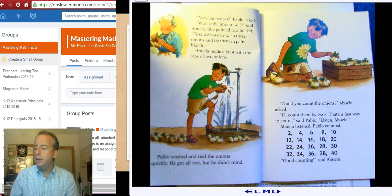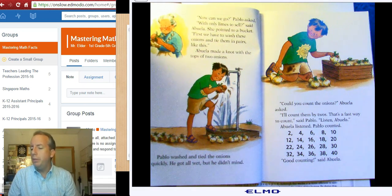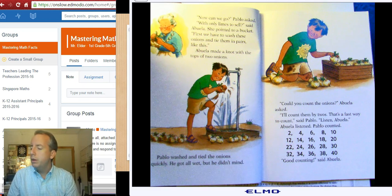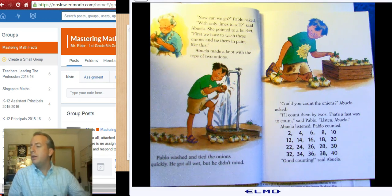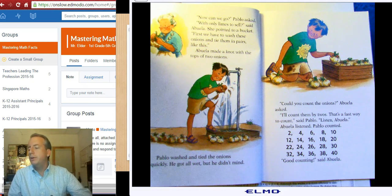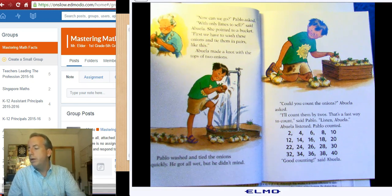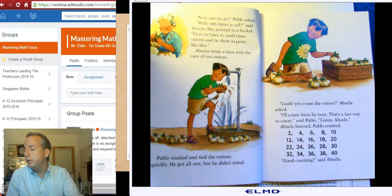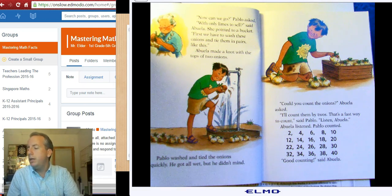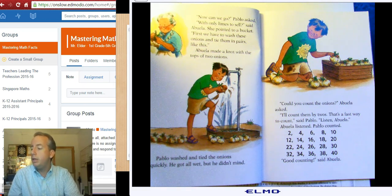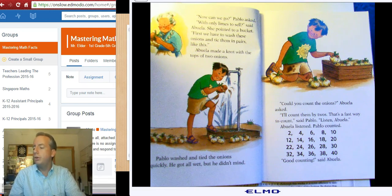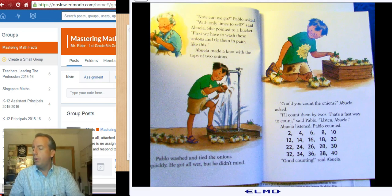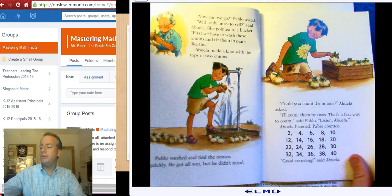Now can we go? Pablo asked. With only limes to sell, said Abuela. She pointed to a bucket. First, we have to wash these onions and tie them in pairs, like this. Abuela made a knot with the tops of two onions. Pablo washed and tied the onions quickly. He got all wet, but he didn't mind. Could you count the onions? Abuela asked. Oh, count them by twos. That's a fast way to count, said Pablo. Listen, Abuela. Abuela listened, and Pablo counted. Two, four, six, eight, ten, twelve, fourteen, sixteen, eighteen, twenty, twenty-two, twenty-four, twenty-six, twenty-eight, thirty, thirty-two, thirty-four, thirty-six, thirty-eight, forty. Good counting, said Abuela.